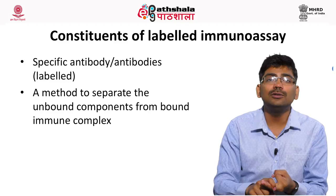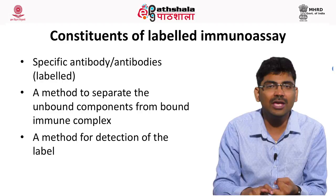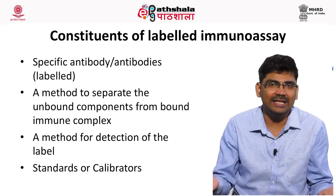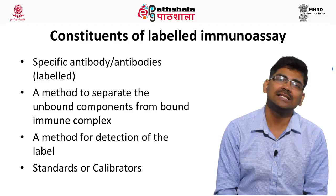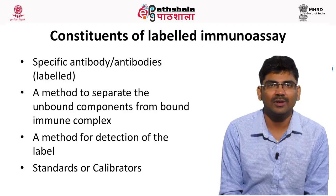You should be able to detect the label. For example, if there is fluorescence, you should detect that fluorescence. That is a method for detection of the label. Finally, for any analytical technique, we need standards — that is the known concentration of antigen or antibody — so that we can calibrate the output. Standards and calibrators are needed in immunoassay just as in any type of assay.